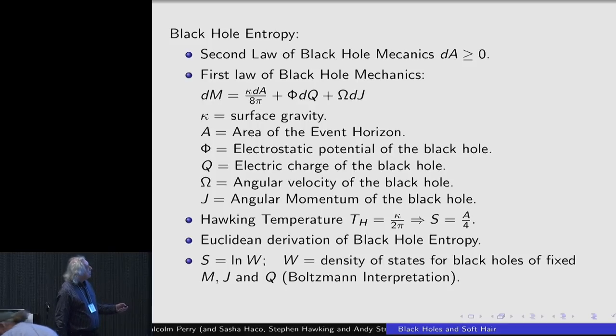Aaron pointed out to us that one of the first signs that there was some kind of similarity between the laws of thermodynamics and the laws of black hole mechanics was that there was an area increase formula, which somehow looked a little bit like the second law of thermodynamics. Also, before Hawking discovered that black holes had a temperature, there was a first law of black hole mechanics, which basically looked rather like the first law of thermodynamics.